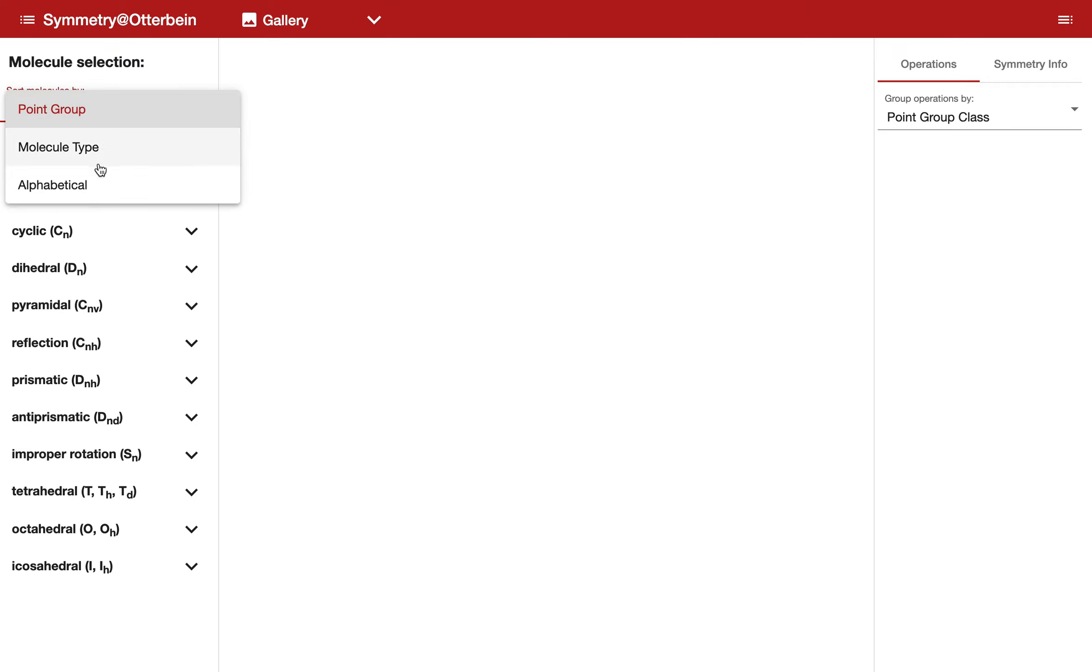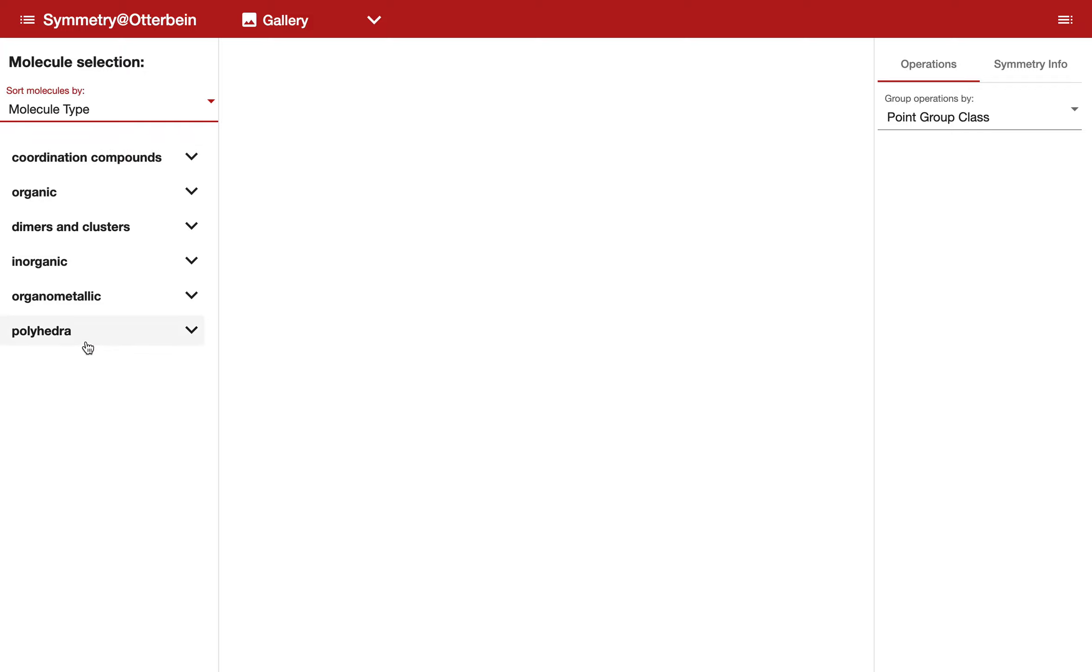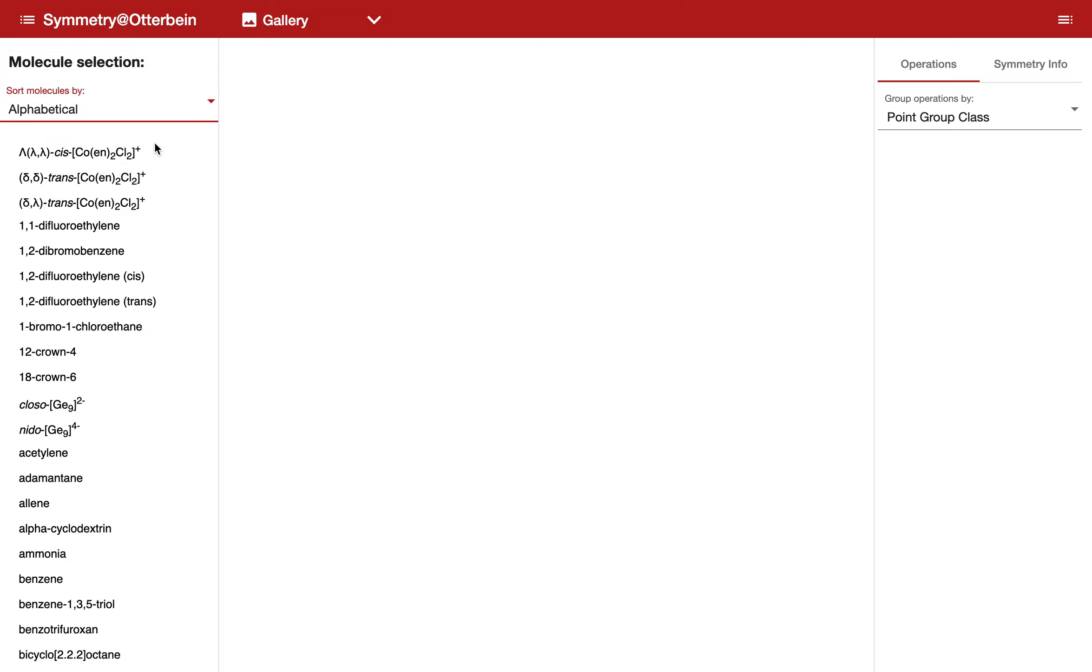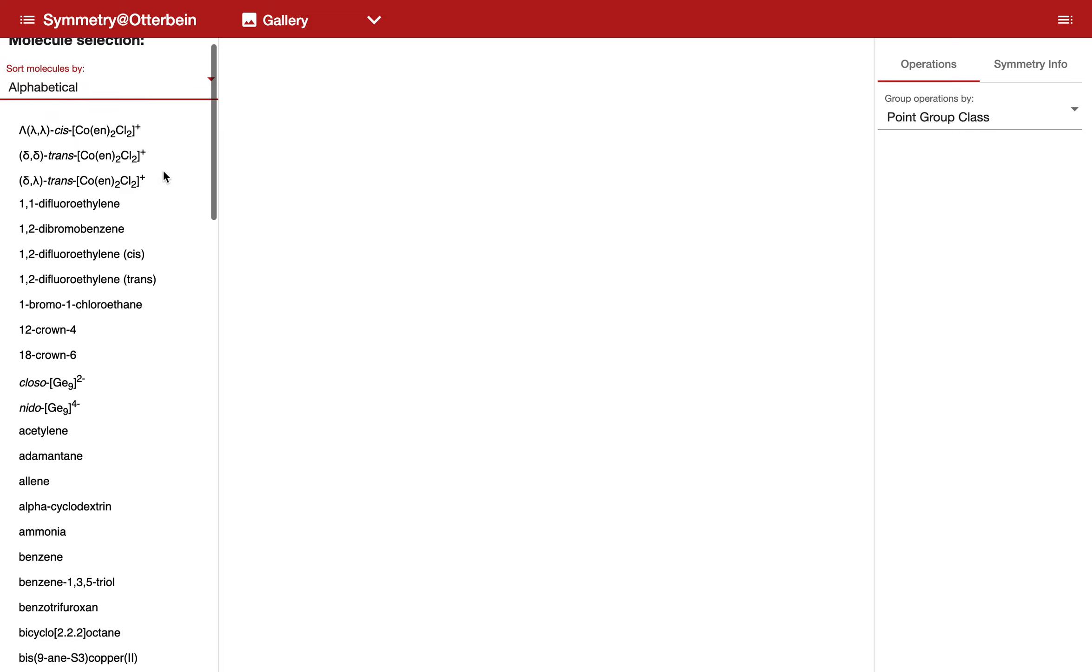We'll talk about what these point groups mean in a little bit. But I want you to know that there are different ways that we can also access molecules that are part of this gallery. We can look at them by molecular type—here's six different types of molecules—or we can look at them as a simple alphabetic listing of these molecules.